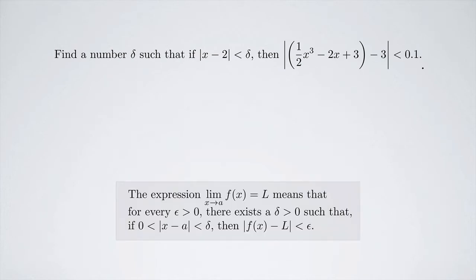Here's the definition of a limit, and this is the precise definition. The expression limit as x approaches a of f(x) equals L means that for every epsilon greater than 0, there exists a delta greater than 0 such that if 0 < |x - a| < delta, then |f(x) - L| < epsilon. So we can translate this into that language of the definition.